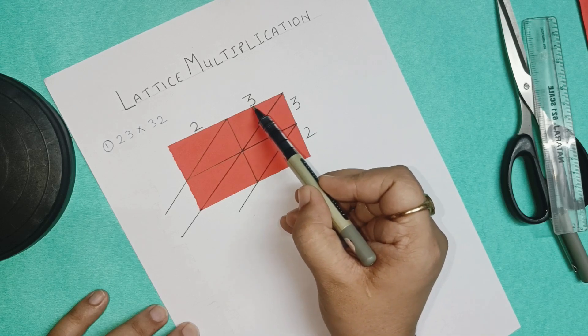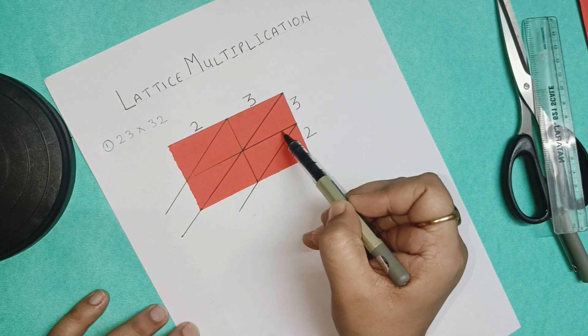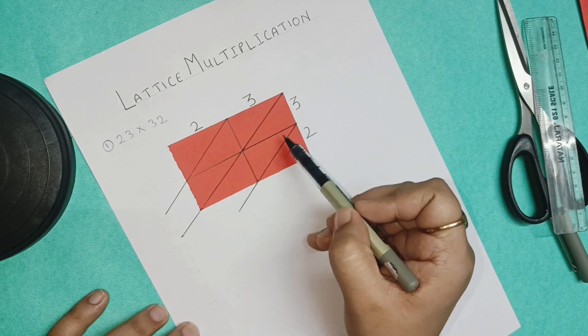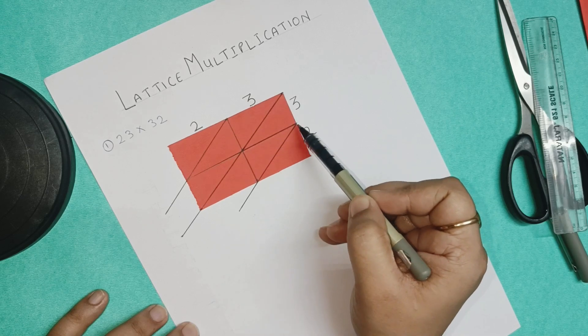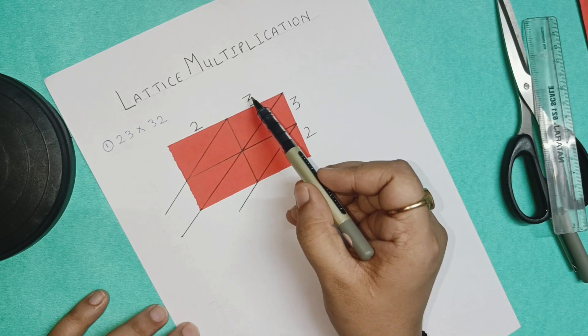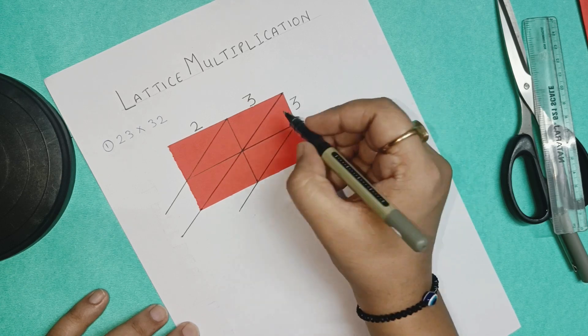Now we write the second number 32 on the side of this rectangle. Okay, 23 on the top of it and 32 at the sideways. We have to multiply 3 into 3 and write it in the first box here. Okay, 3 into 3 here and 3 into 2 here in this second box. So let us start with the multiplication.